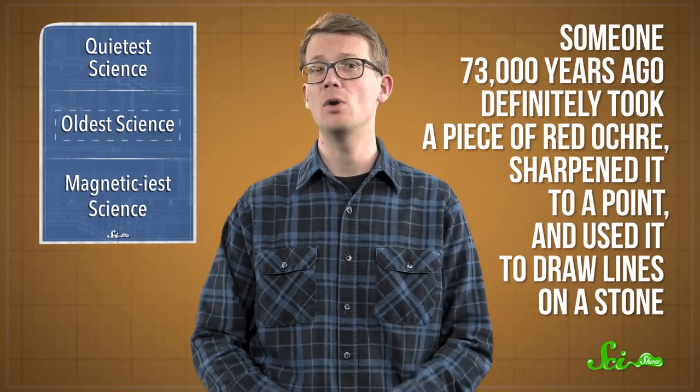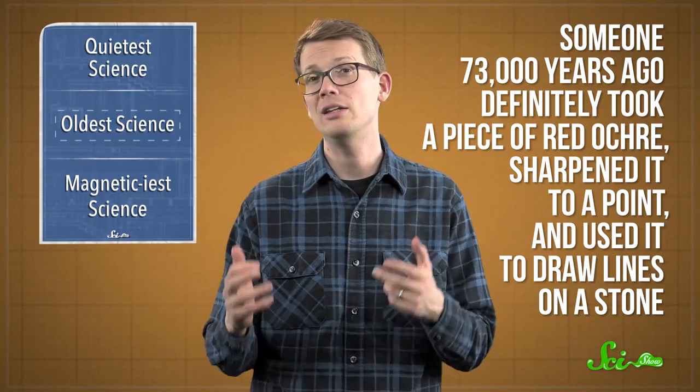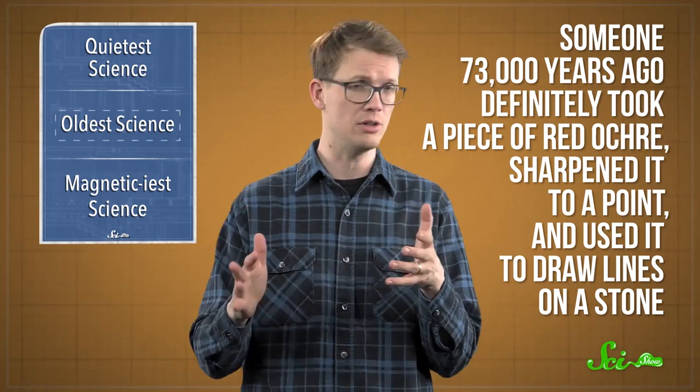Drawings are clearer. Someone 73,000 years ago definitely took a piece of red ochre, sharpened it to a point, and used it to draw lines on a stone. Figuring out why, if they were drawing something, or marking ownership or counting, is pretty much impossible. What we do know is that these nine lines aren't the whole story.